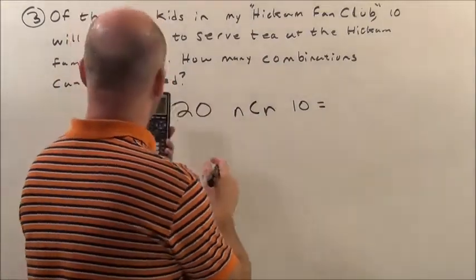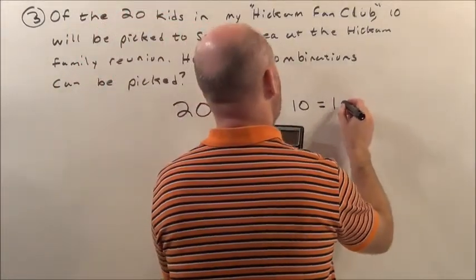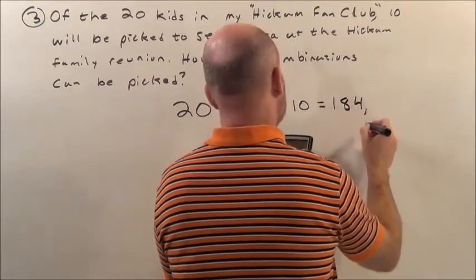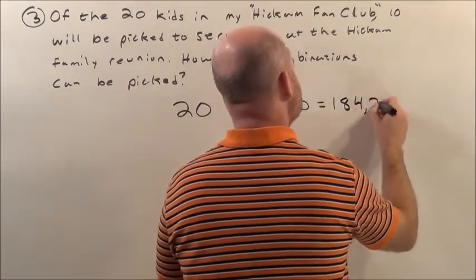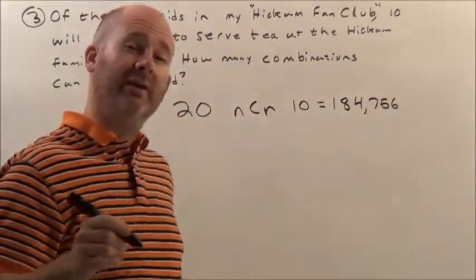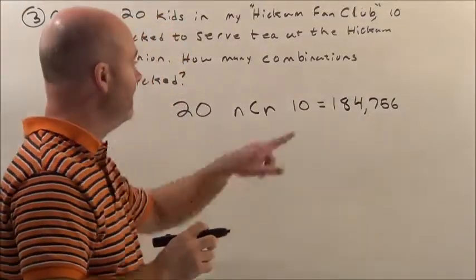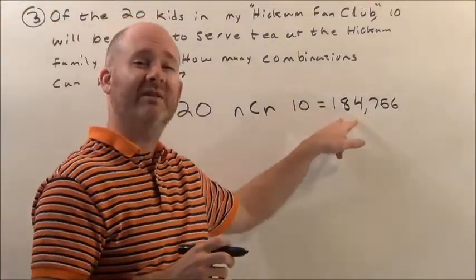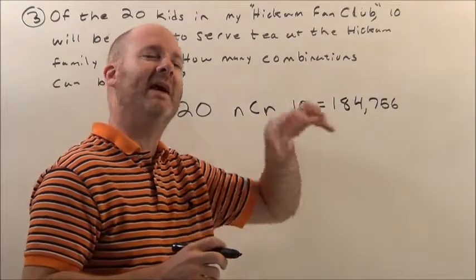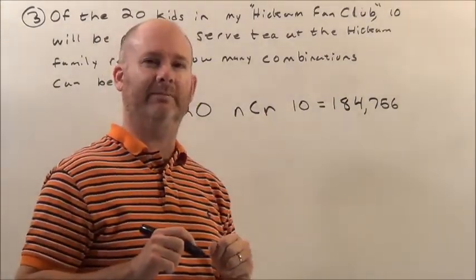Did it on the calculator earlier. It says that is 184,756 ways. If I have 20 kids and I'm just going to pick 10 of them, there are 184,756 different ways I can pick those 10 kids out of 20.